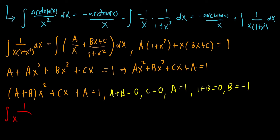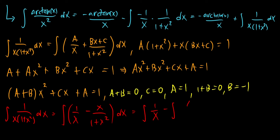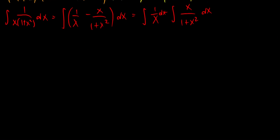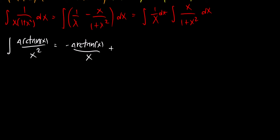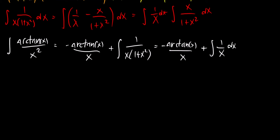Now we have the values to solve the integral. The integral of 1 over x times 1 plus x squared dx equals the integral of 1 over x minus x over 1 plus x squared dx. We can break that apart into the integral of 1 over x minus the integral of x over 1 plus x squared dx. So the original integral equals negative arctangent of x over x plus the integral of 1 over x dx minus the integral of x over 1 plus x squared dx.